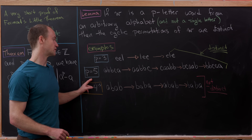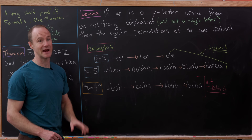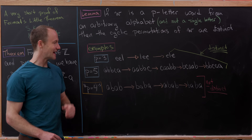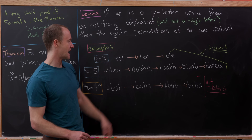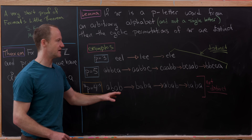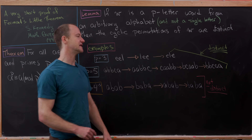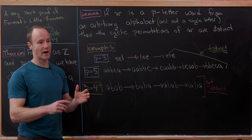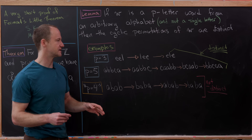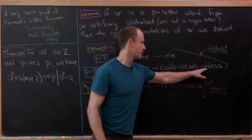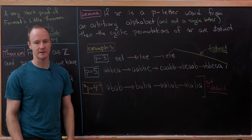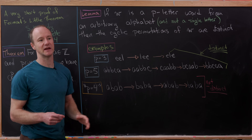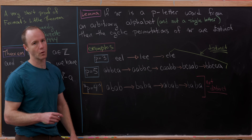Now let's look at a case when p equals five. We'll take a three-letter alphabet — a, b, and c — and our word will be a, b, b, c, a. As we cyclically permute this, we get: a, a, b, b, c — then c, a, a, b, b — then b, c, a, a, b — then b, b, c, a, a. These are all distinct words. If we cyclically permute one more time, we get back to the beginning. Since p equals five and the word has five letters, we get back after the fifth cyclic permutation — that's the order of the permutation.